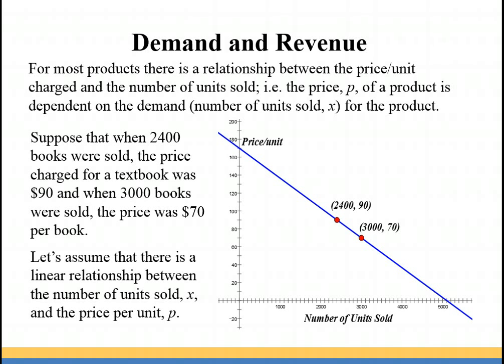So if you look at the information that was given, we had 2400 books that were sold at a price of $90 each, so that gave us the ordered pair of 2400, 90. Then at $70, 3000 were sold, so we have the ordered pair of 3000, 70. And we drew a straight line through those two points. Notice that on the x-axis we have number of units sold, which is the demand for the product, and on the y-axis we have the price per unit.